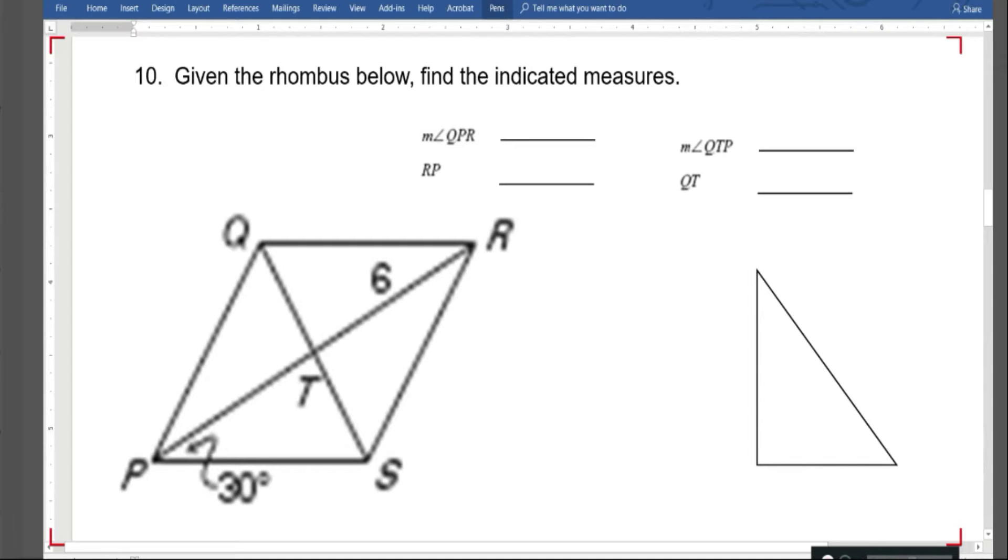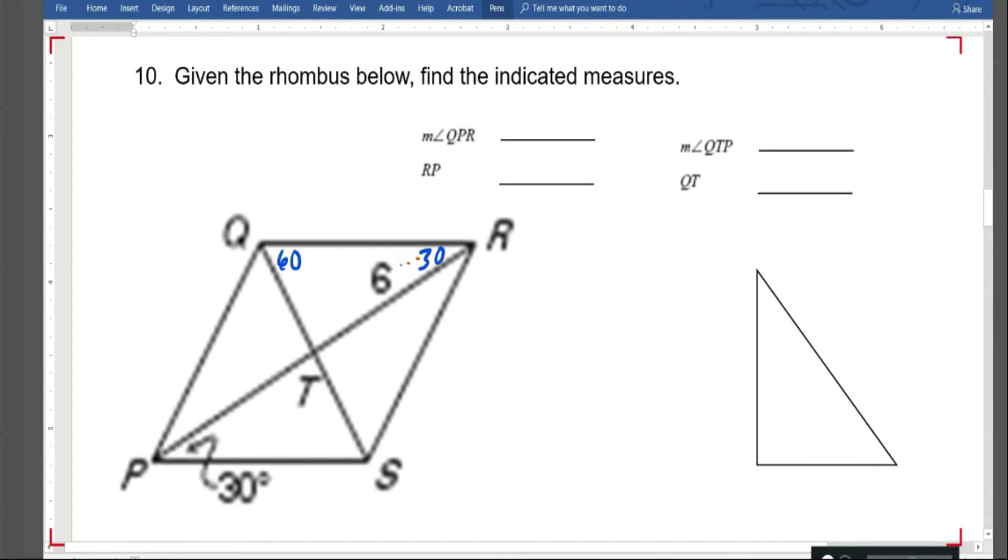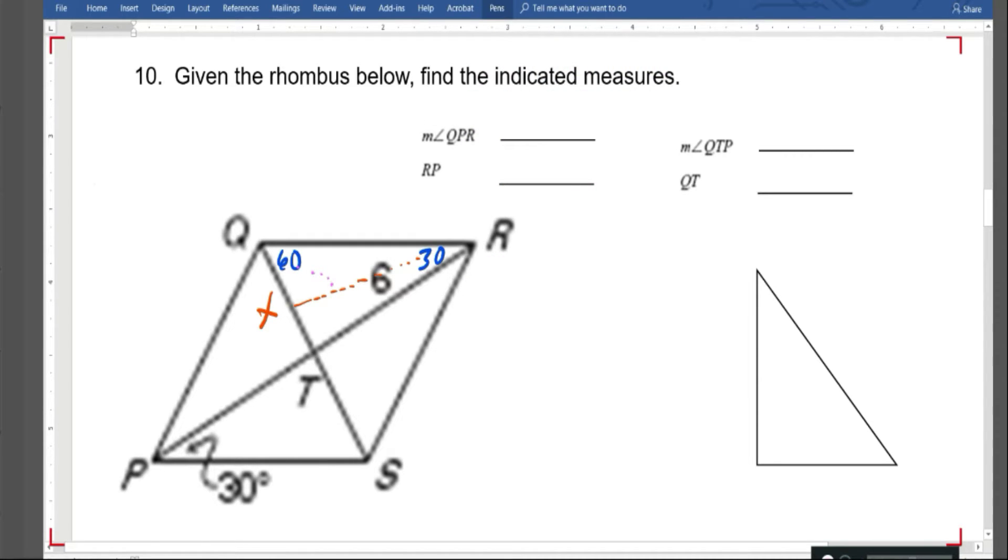So we know this is 6. We know this angle is 30. This one's 60. The angle or the side length opposite the 30 would be x. And the one that's opposite the 60 is x root 3. So that's x times the root 3.